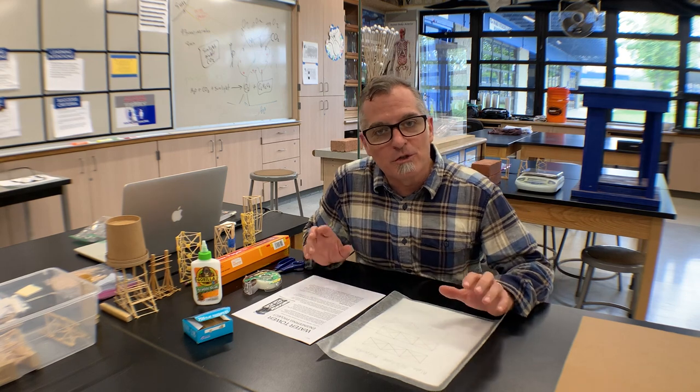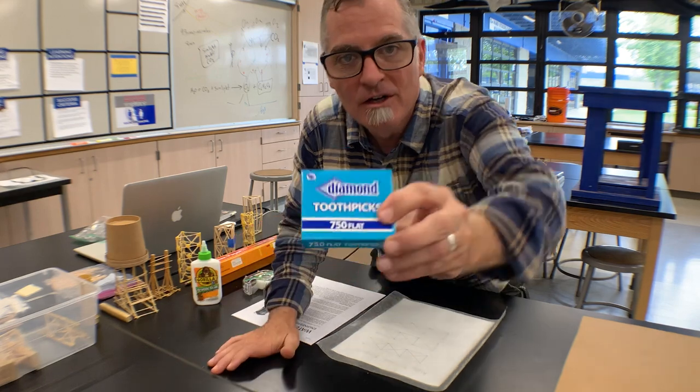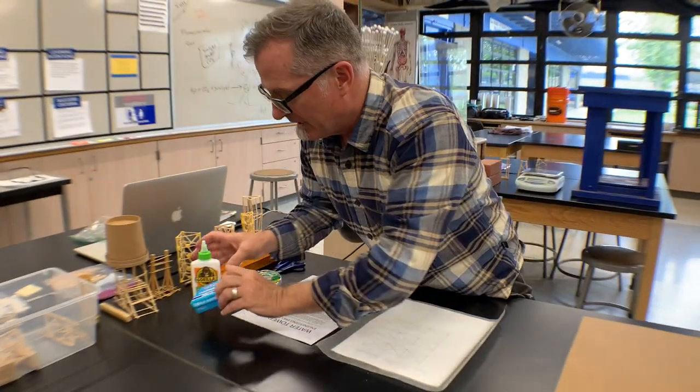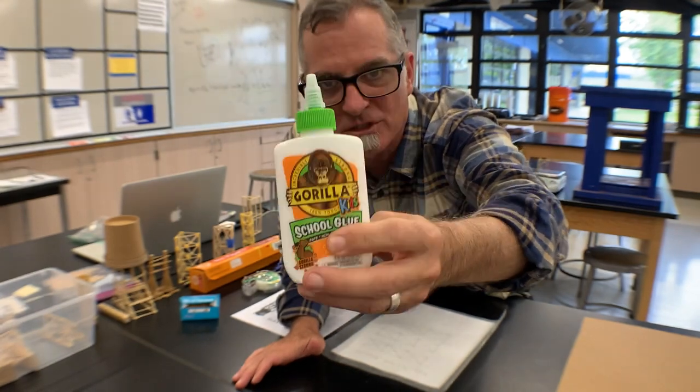Hi guys, this is Mr. Vandergift and I want to show you how to construct your toothpick water tower. So you're going to need a couple of things. First thing you're going to need is flat toothpicks. Next thing you're going to need is some glue, usually some Gorilla glue or white glue or Elmer's glue.